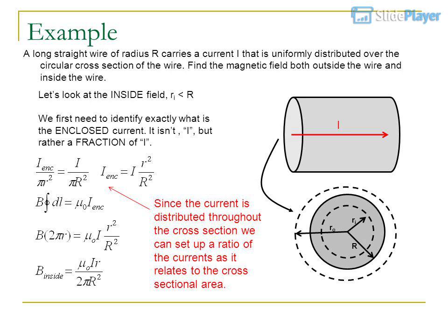Example: We first need to identify exactly what is the enclosed current. A long straight wire of radius R carries a current I that is uniformly distributed over the circular cross section of the wire. Find the magnetic field both outside the wire and inside the wire. Let's look at the inside field, r less than R.